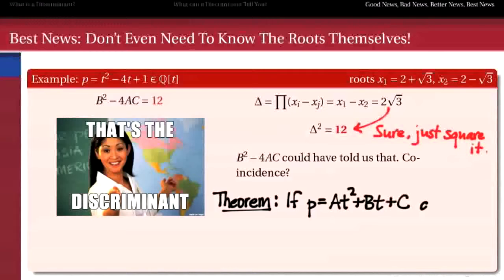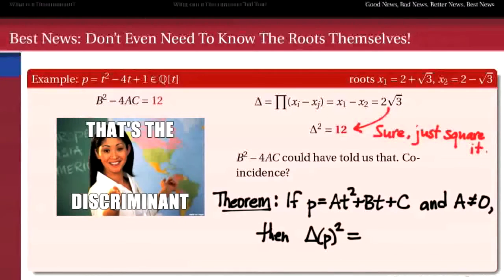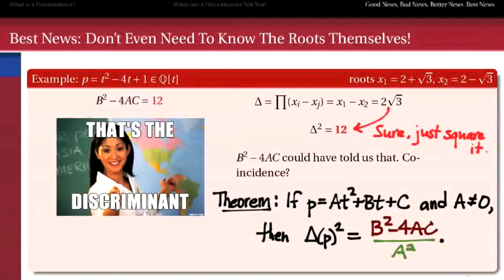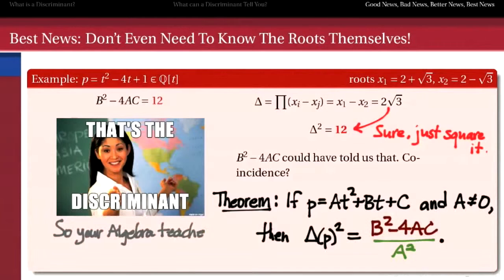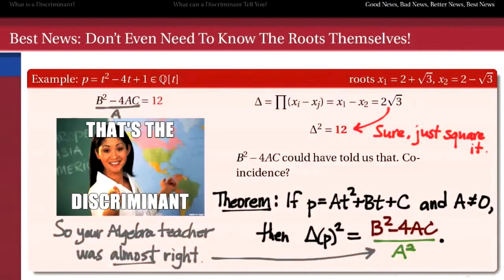So the theorem is that for any quadratic polynomial at squared plus bt plus c, the square of its discriminant in our sense is b squared minus 4ac — well, almost. Your high school teacher told you a little white lie: if the leading coefficient is not zero, we also need to divide by a squared. So the actual square of the discriminant of a quadratic is b squared minus 4ac, all divided by a squared. But they were almost right — if you divide by a squared, we come into agreement. And for this polynomial, because a was equal to 1, we just happen to already agree.